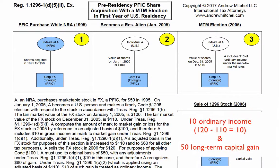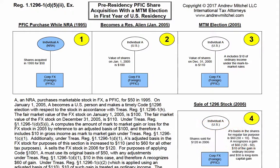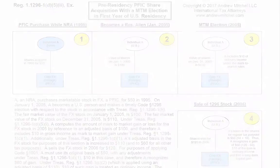Ten dollars of the gain is treated as ordinary income under the mark-to-market rules. The remaining $50 of gain is long-term capital gain because A held the stock for more than one year.